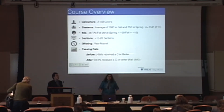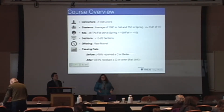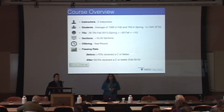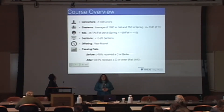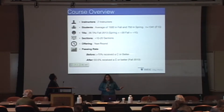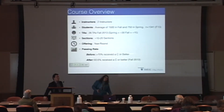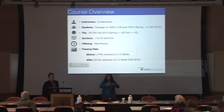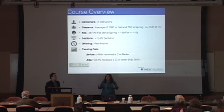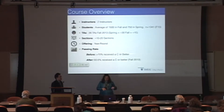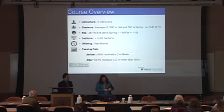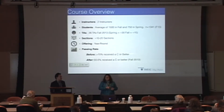The course itself is kind of a unique course. There are two instructors for Accounting 211. They usually have about 1,500 students in the fall, about 750 in the spring, about 150 in the summer. In the fall, which is the timeframe we looked at social networking through Yammer, there were 26 TAs, usually about 30 in the fall and 15 in the spring, and 10 to 20 sections per semester. It's offered year round.